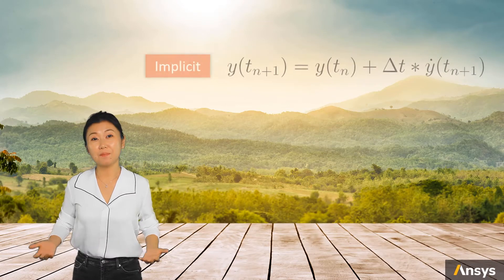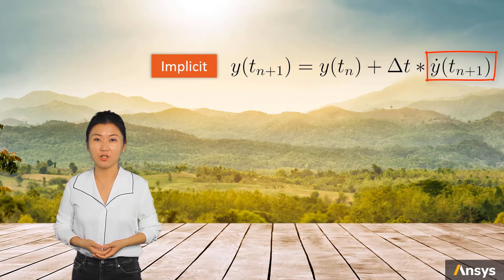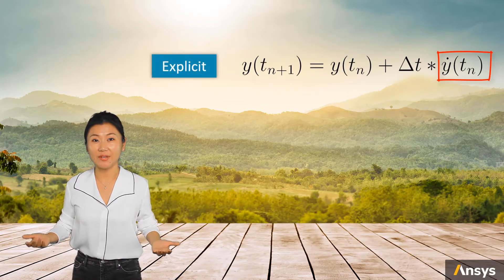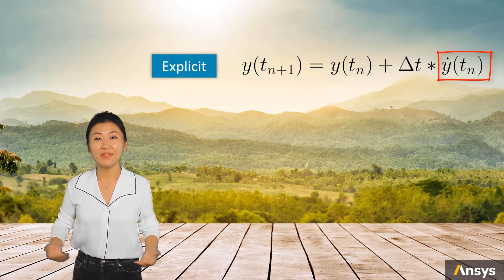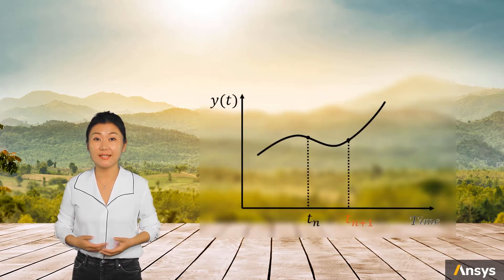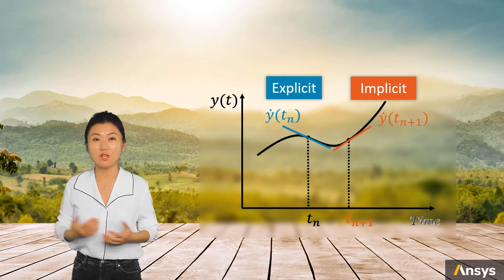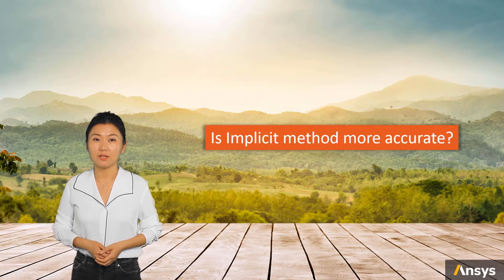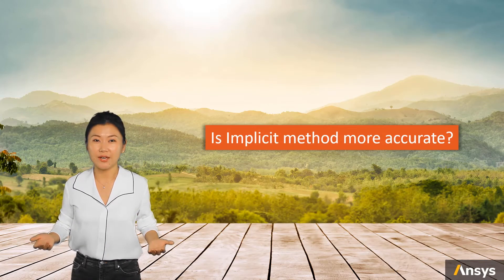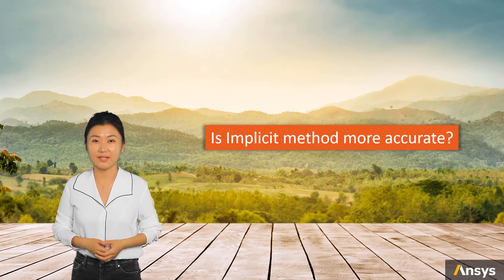We showed that for the implicit method, the solution is implicit in the final equation, which needs a solving process. For the explicit method, the solution is directly obtained. You might think that since the implicit method uses the slope from the unknown step and the result needs to be solved, it should be considered a more accurate time integration method. This is actually not true — implicit integration is not necessarily more accurate than explicit.